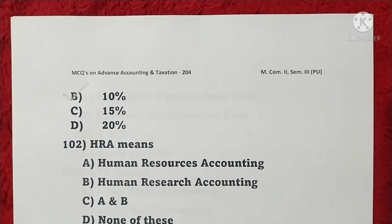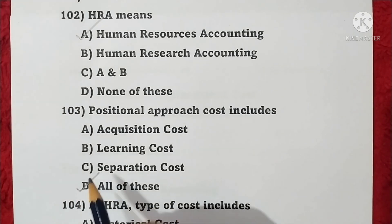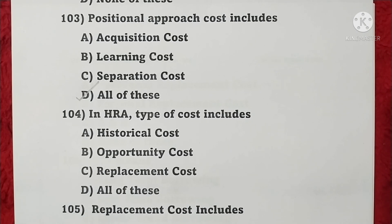Question 102: All of these are correct — option D is correct. Question 103: Positional approach cost includes acquisition cost, learning cost, and separation cost — all of these, so option D is correct. Question 104: In HRA, types of cost include historical cost, opportunity cost, and replacement cost — all of these, so option D is correct.